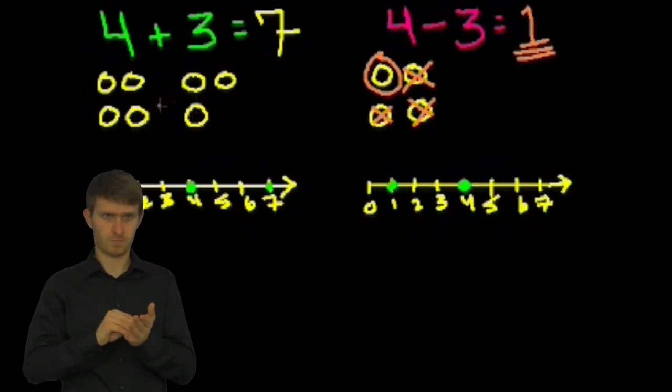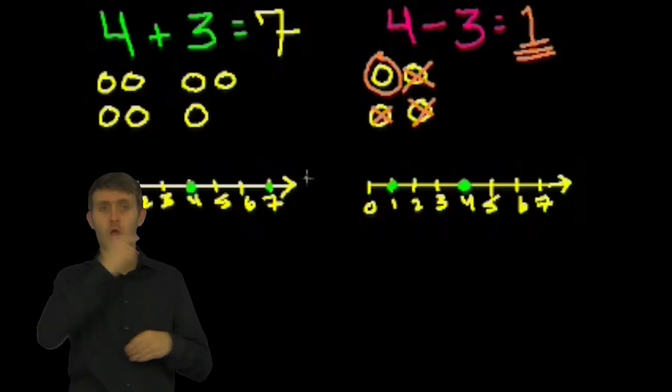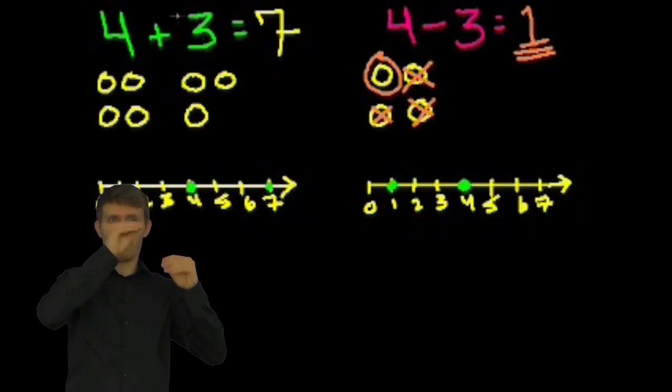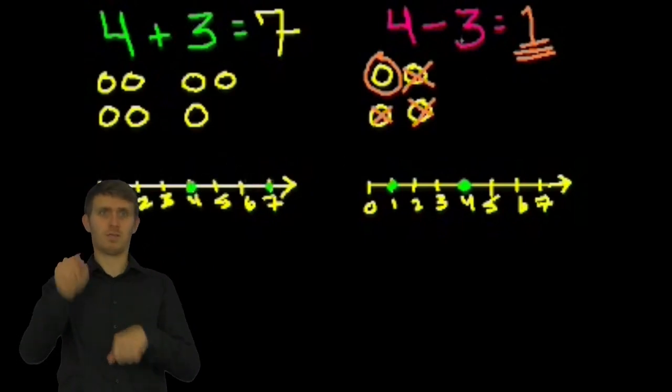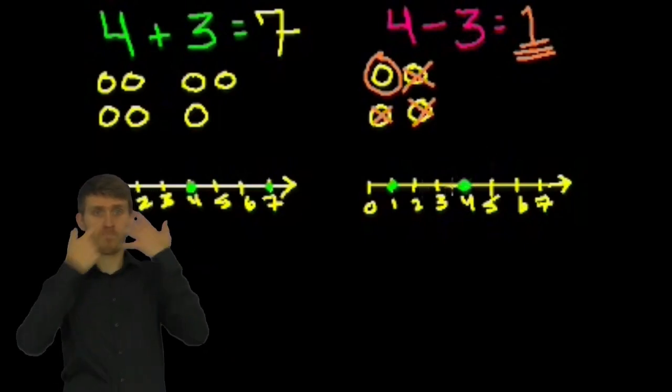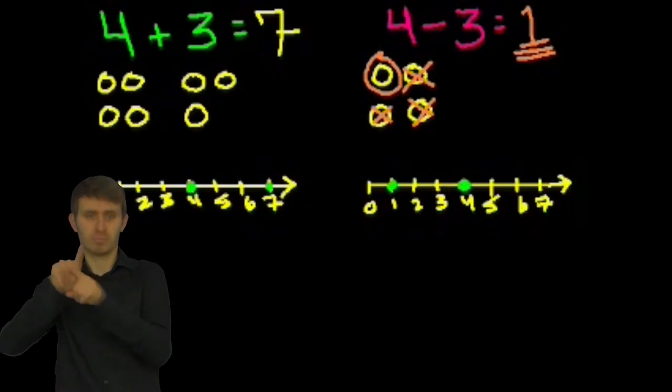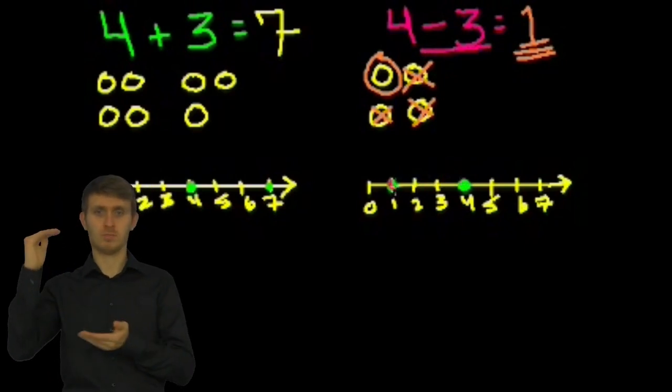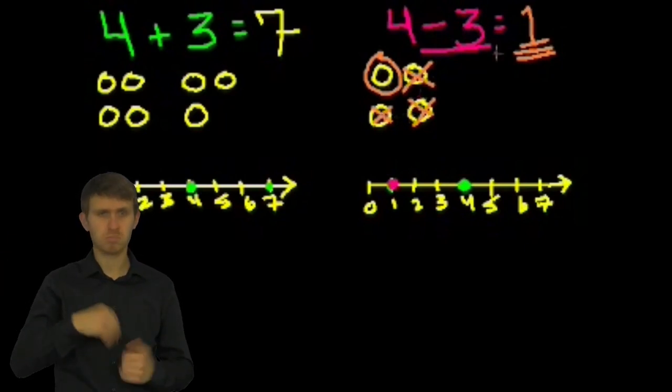So just to review, addition is you're doing more of something. Subtraction is you are taking away. If you think about it on the number line, addition is increasing along the number line by that amount. So in this case, we increased along the number line by 3. And so we went from 4 to 7. In the subtraction case, we decrease back on the number line. So we decrease by the amount that you're subtracting. So in this case, we decreased by 3. So we went back 1, 2, 3, and we had 1. And the other way to view it, if I have 4 or something, if I give 3 away, or if I ate 3 of them, or if I lost 3 of them, I would have 1 left.